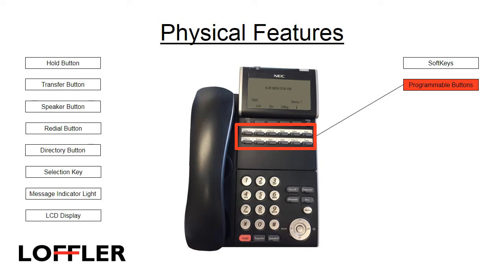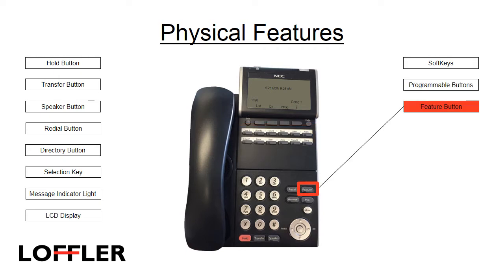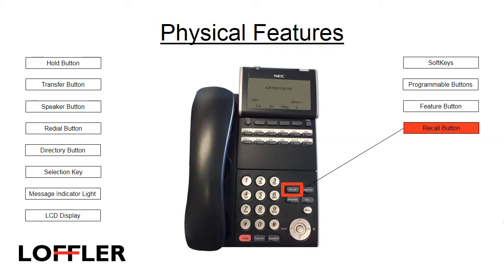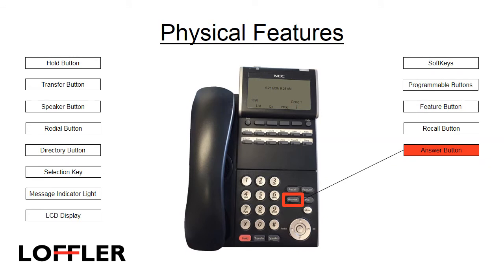The programmable buttons are used for a variety of telephone features such as lines, speed dials, call appearances, headset, or park. The feature button is used occasionally to access telephony feature setup. The recall button provides dial tone while connected with outside lines. The answer button allows you to answer an external call that's ringing your phone while you are already on a call. The first call will automatically be put on hold. To return to the first call, press the flashing line key. This feature is only functional with outside lines — an internal call does not activate the answer key.